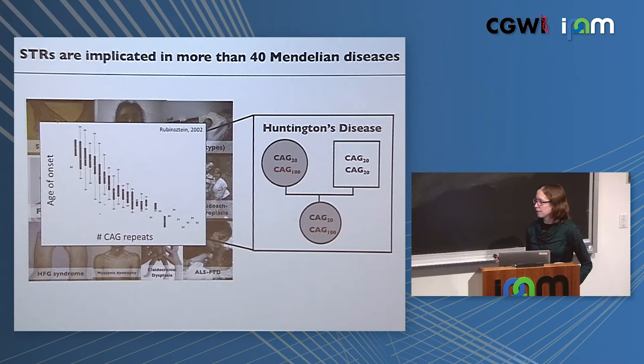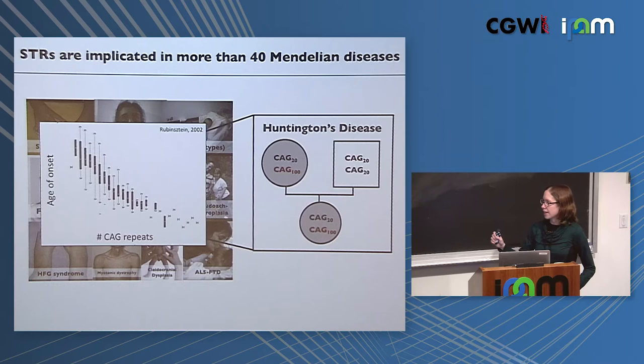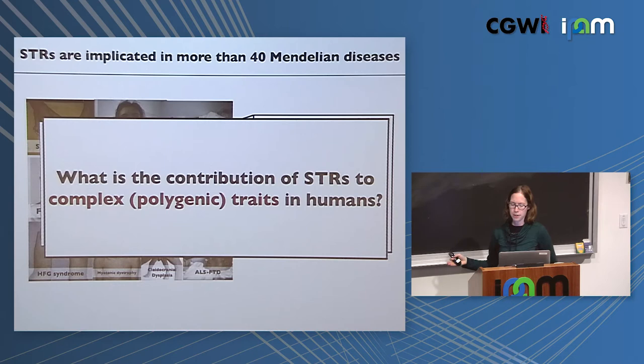This quantitative relationship is similar for many other repeat disorders — often controlling age of onset, with longer repeats associated with higher severity. We know about 30 such cases, but there are a million and a half of these repeats in our genome. That got us thinking: what is the contribution of STRs on a bigger scale, contributing to more complex or polygenic traits in humans? This drives a lot of the questions we try to answer.